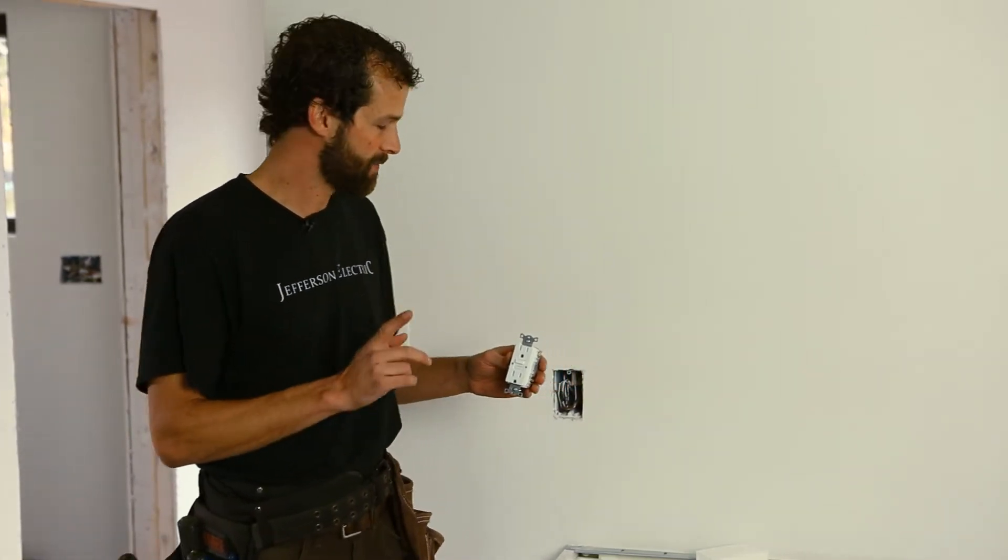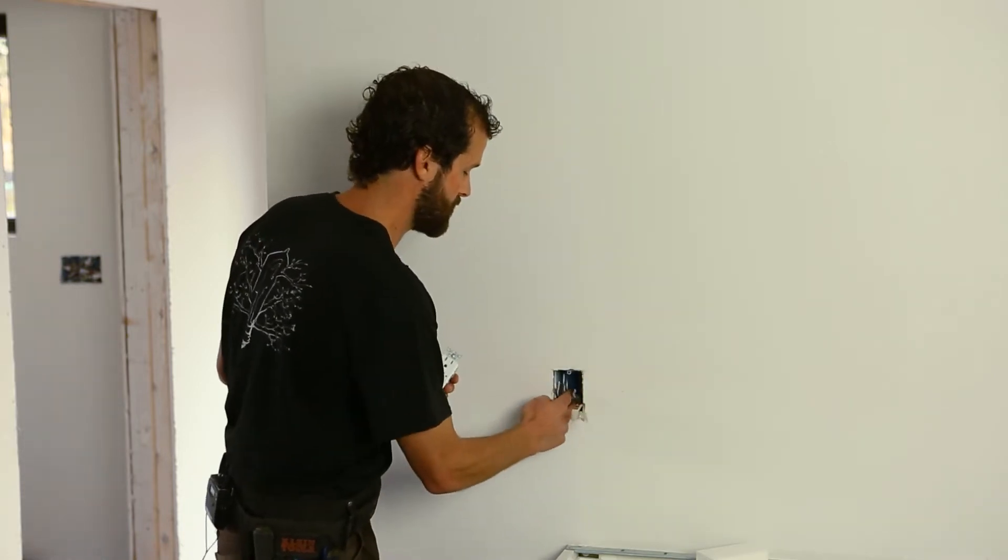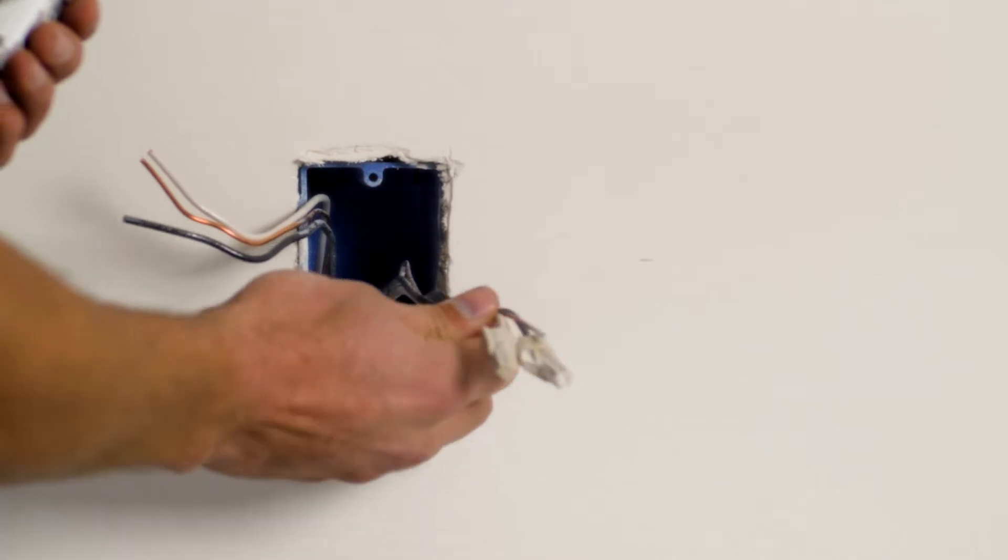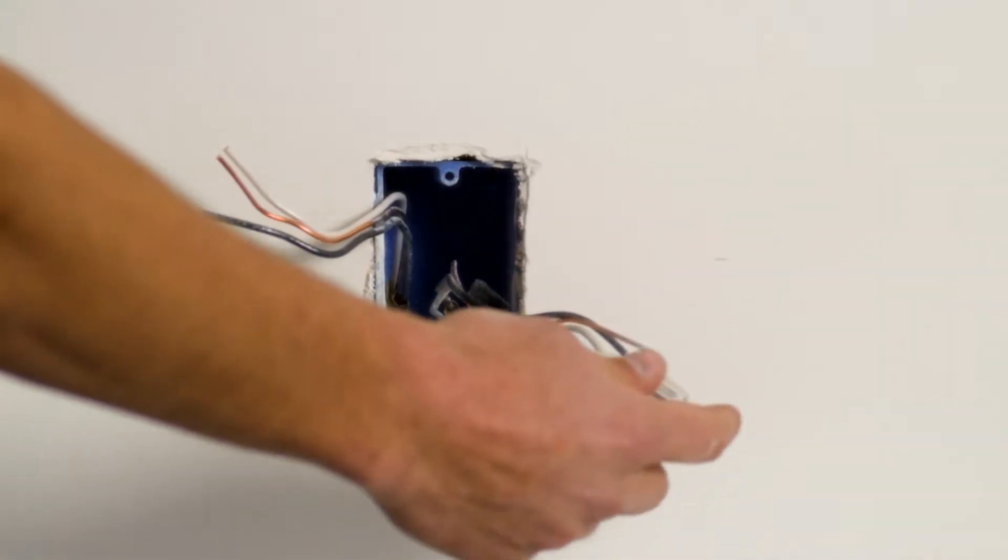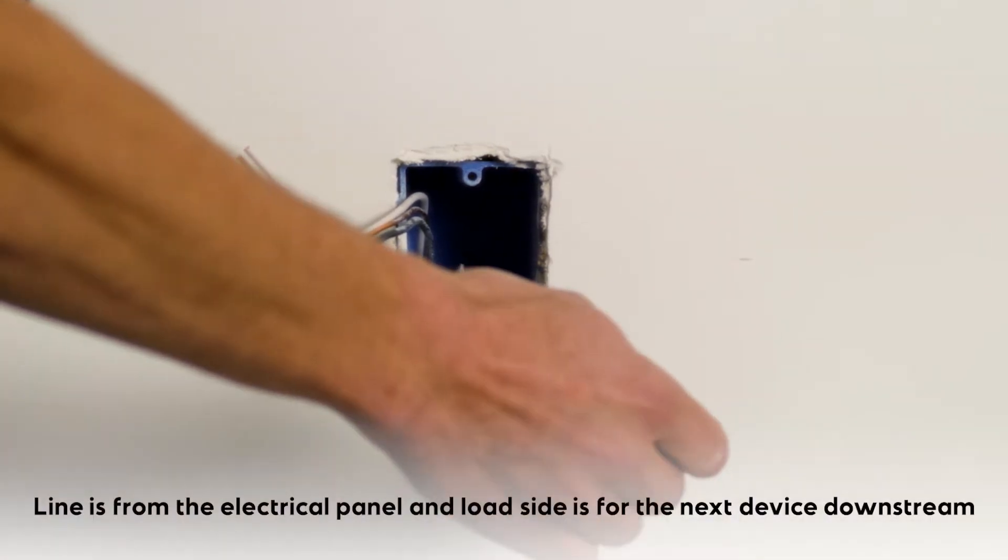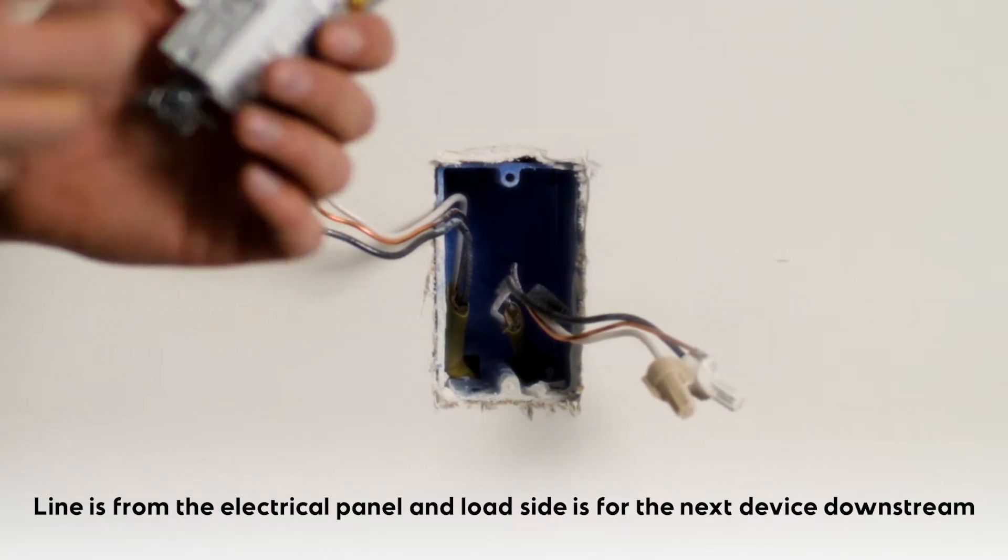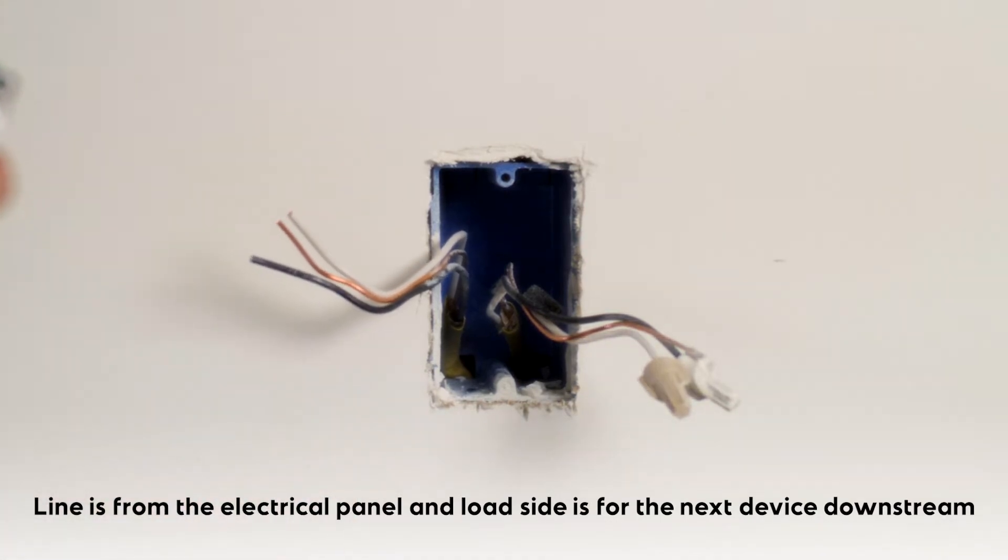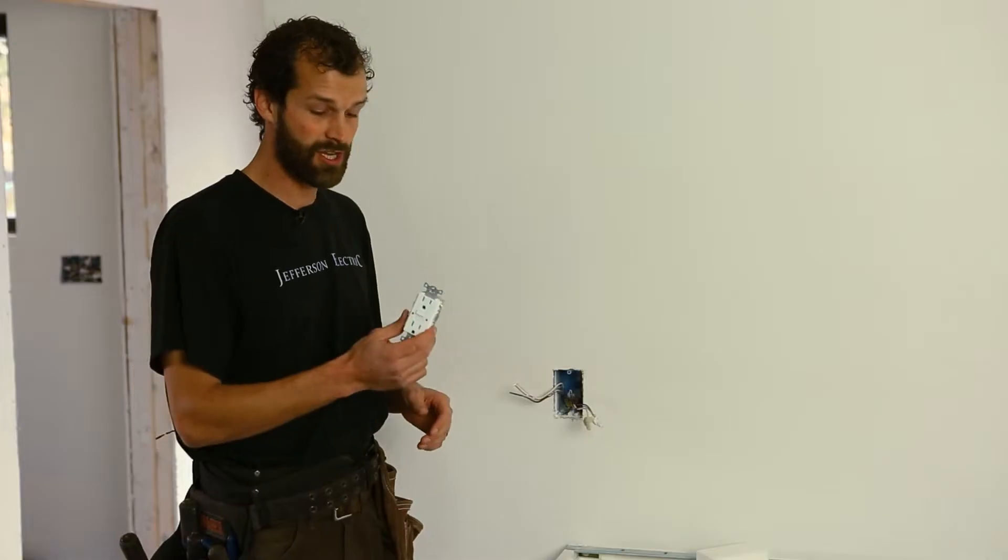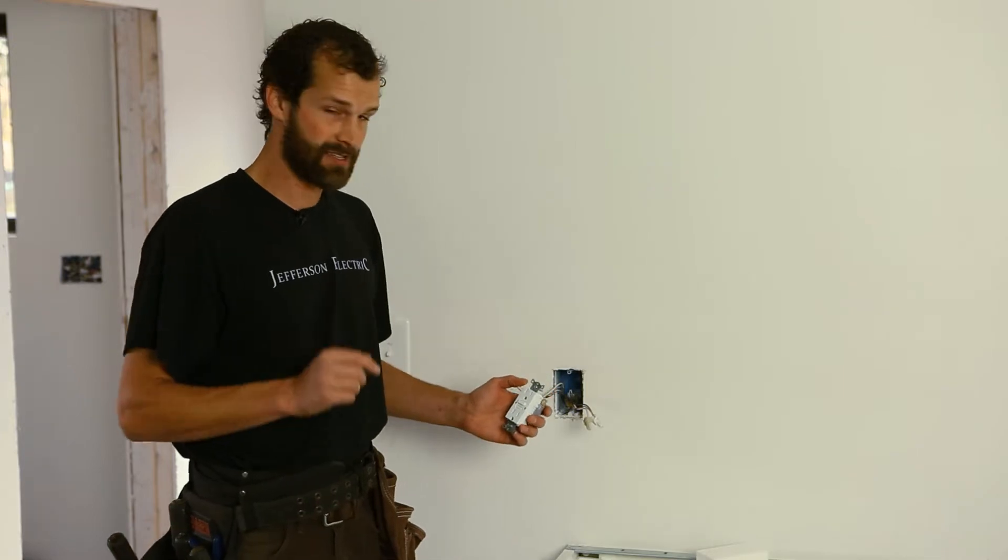In this case, we're not only protecting this location with the GFCI, but you'll see we've got two sets of conductors, two cables coming into this box. The first is marked with a flag of black tape and made safe with wire nuts - that's our line side coming from the panel, our power source. The second is our load side, going to the next device downstream. GFCI costs about $18 at a retail hardware store, so utilizing one GFCI to protect multiple locations is a cost-effective approach.